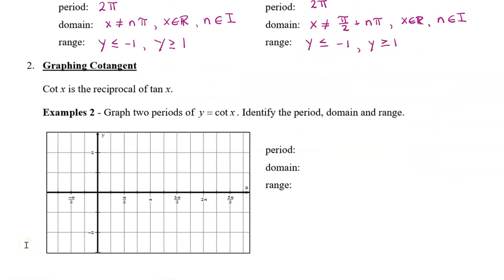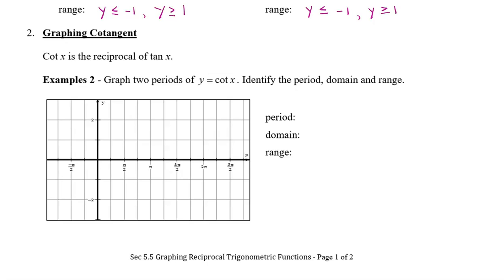Next let's take a look at cotangent. Cotangent is the reciprocal of tangent. Let's graph our tan graph first and then use our knowledge of reciprocals to graph cotangent. The tan graph has asymptotes at pi over two and negative pi over two, and again at three pi over two and five pi over two. The tan graph has a point at (0, 0) and at (pi over four, 1), and that repeats. I'll draw this dotted as our guide and draw two periods of tan.